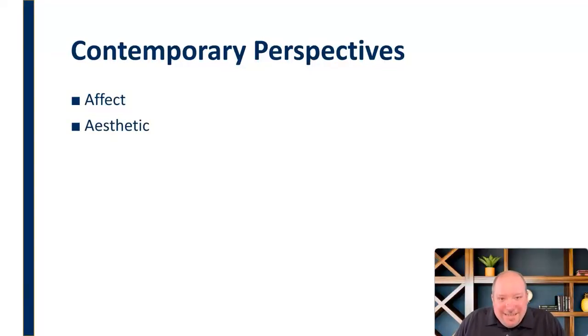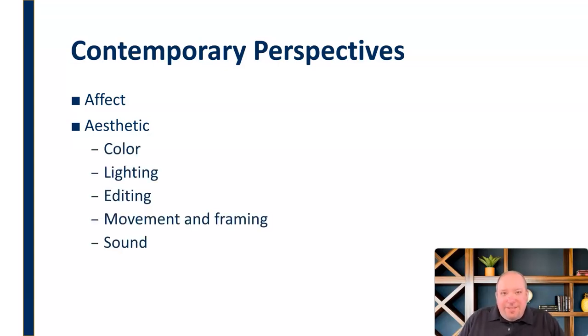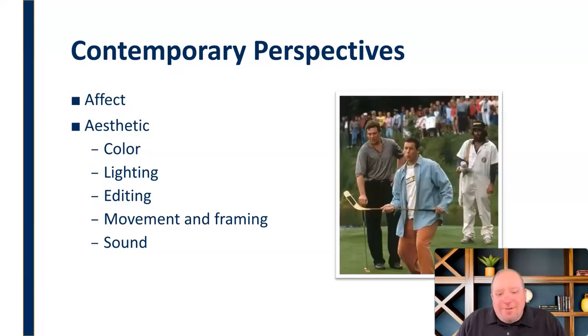We also think about aesthetic and how things look, and we're getting more and more of this as we advance technology in the way to really increase exposure to these things. So when we talk about aesthetic, we're talking about things like color and lighting and editing and movement framing and sound and all of these things. So you're going to look for one kind of aesthetic, for example, in an Adam Sandler movie.